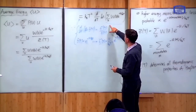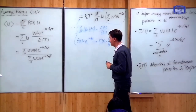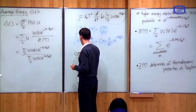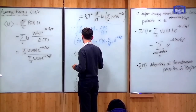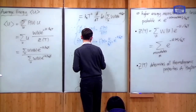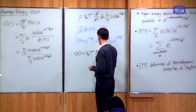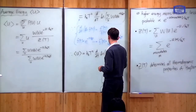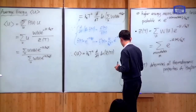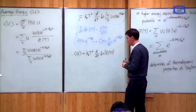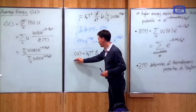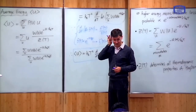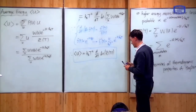And you see that this sum is simply the partition function Z. So we get the final result: that the mean energy U-bar is equal to k_B T squared times the derivative d/dT of the log of the partition function Z. This is an example of how we can work out a thermodynamic property like the energy from a knowledge of the partition function.